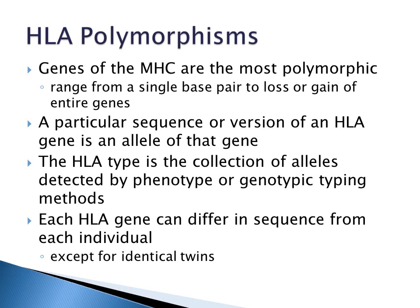Genes of the MHC are the most polymorphic genes of the human genome. The polymorphisms range from a single base pair to the loss or gain of entire genes. A particular sequence or version of an HLA gene is an allele of that gene. The HLA type is the collection of alleles detected by phenotypic or genotypic typing methods. Each HLA gene can differ in sequence from each individual except for identical twins.